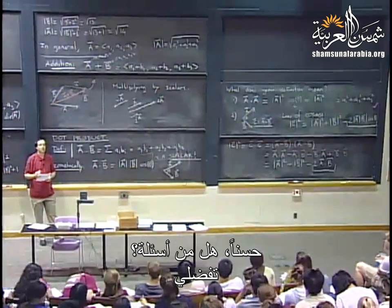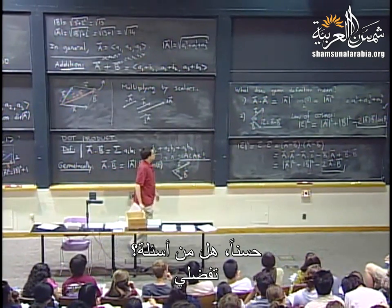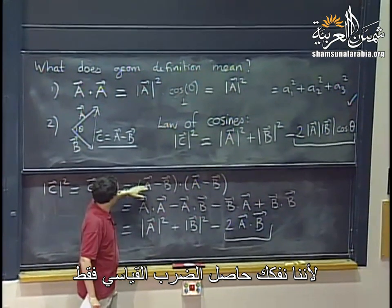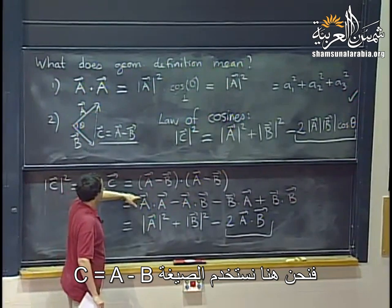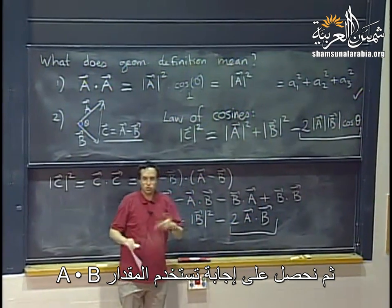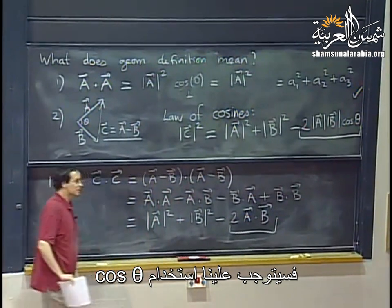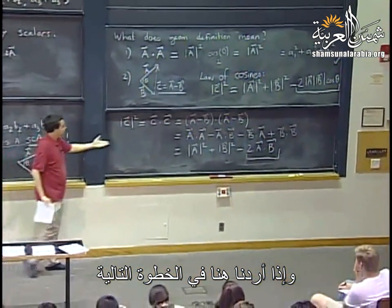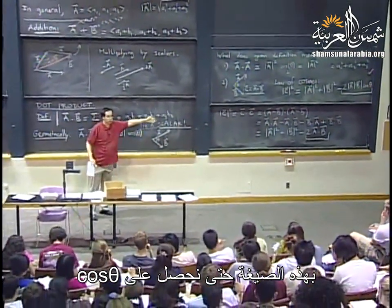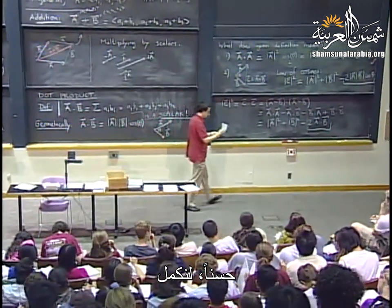Why isn't there a cosine theta in the second formula? In the second one, I'm just expanding the dot product algebraically — writing C equals A minus B and expanding. I get an answer that has an A dot B. If I wanted to express that without a dot product, then I would have to introduce a cosine and I would get the same expression as in the law of cosines. The next step to recover the law of cosines would be to plug in the formula for A dot B, and then you would have a cosine.